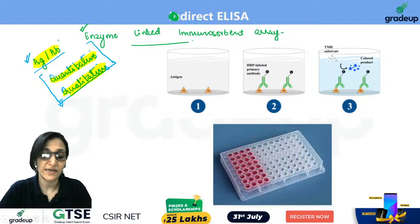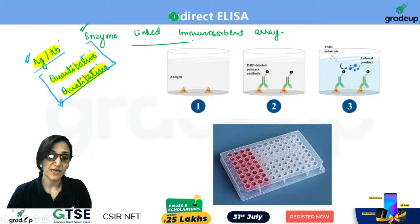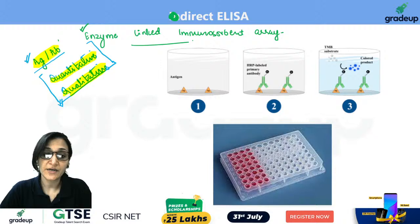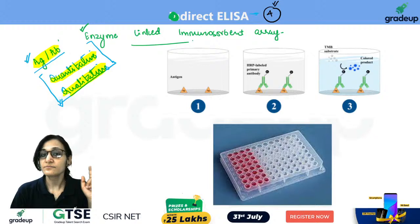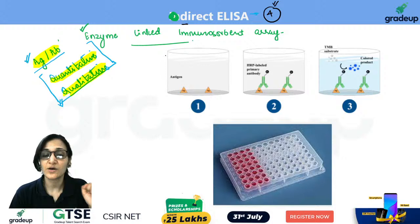ELISA can be done both quantitatively and qualitatively. Now, how many types of ELISA do we need to study? We need to study four types of ELISA, and we'll complete all four today. The names are: Direct ELISA, Indirect ELISA, Sandwich ELISA, and Competitive ELISA.